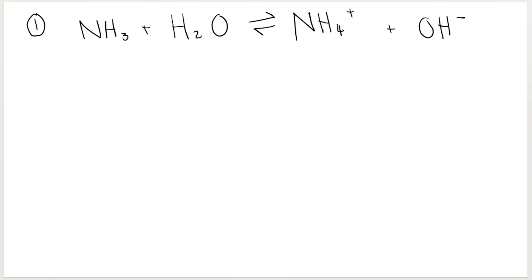The way that we do this is we pair up the different pieces of the reaction. Here we've got NH3, and we can see that it became NH4+. Over here, I have H2O, water, and I can see that it became OH-.